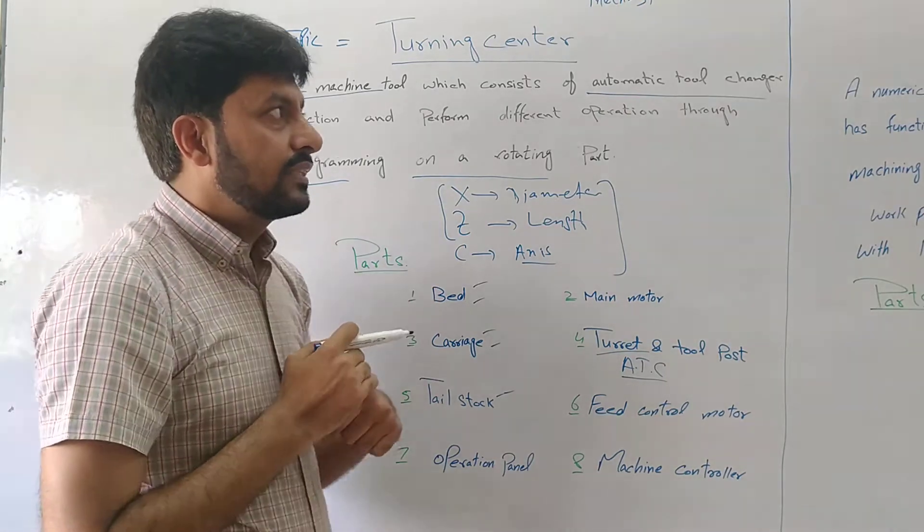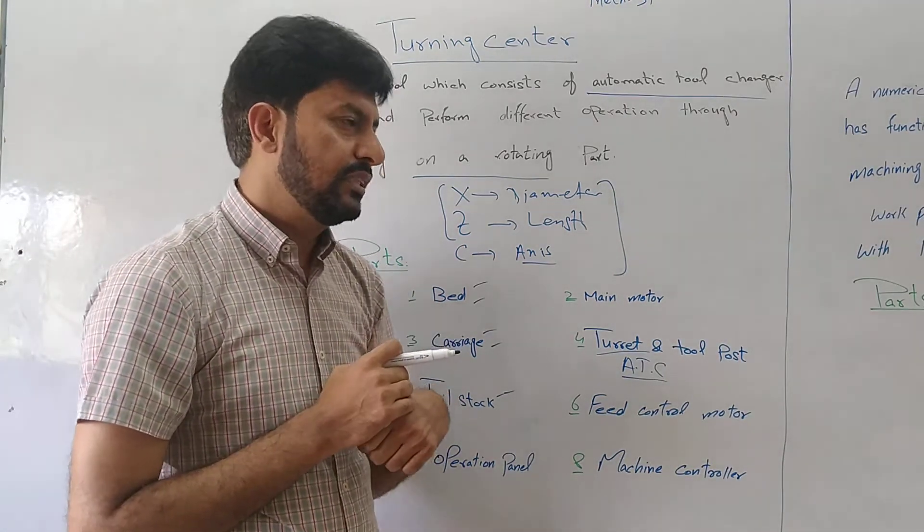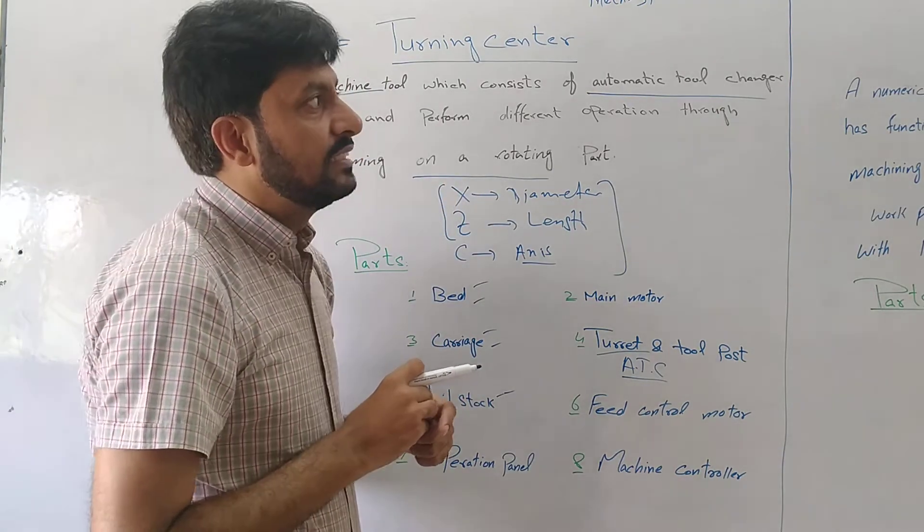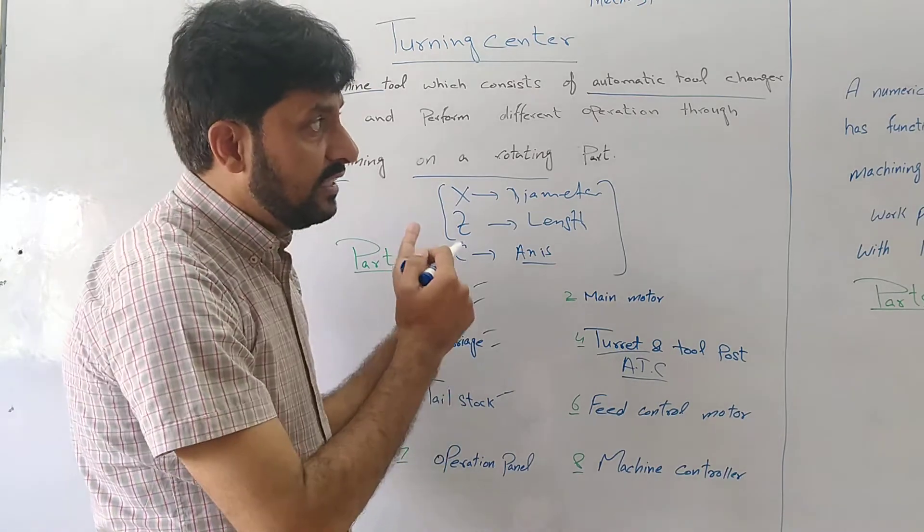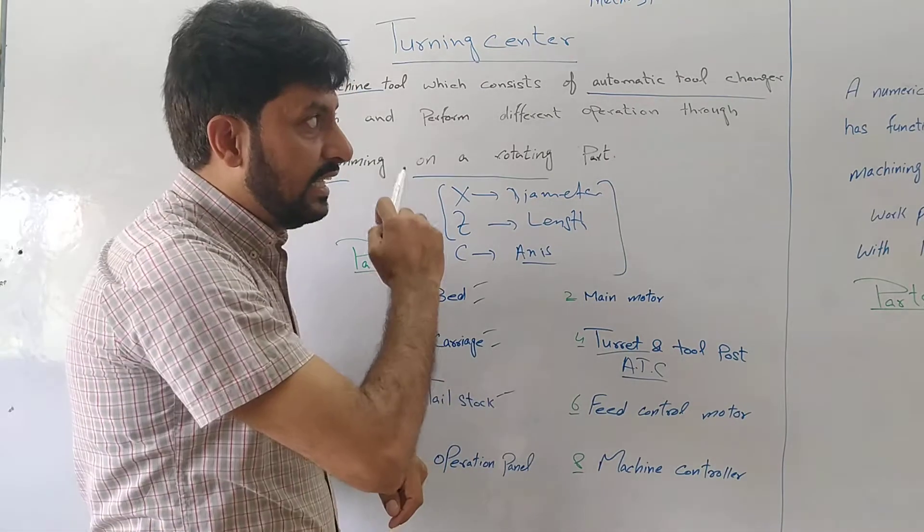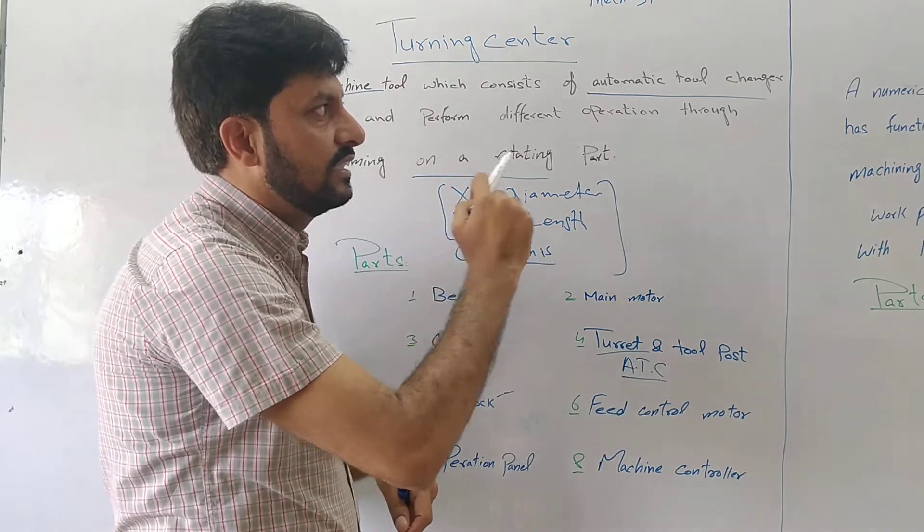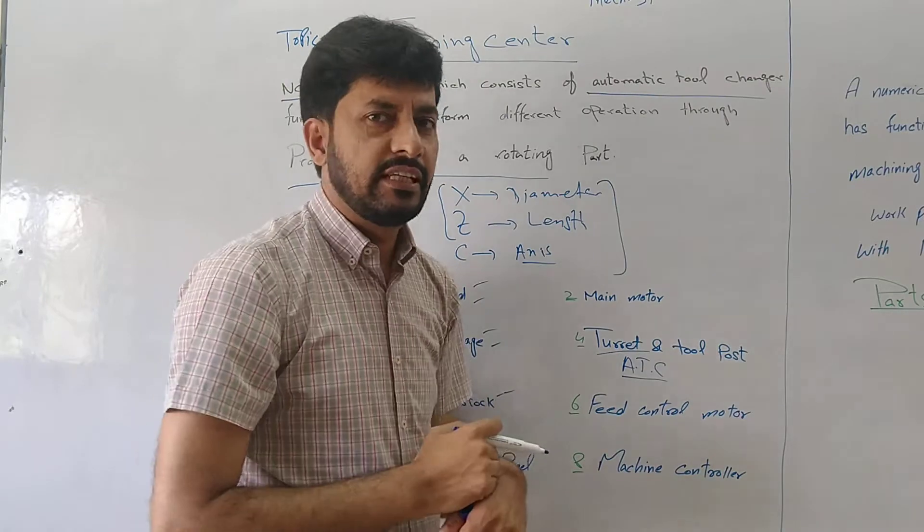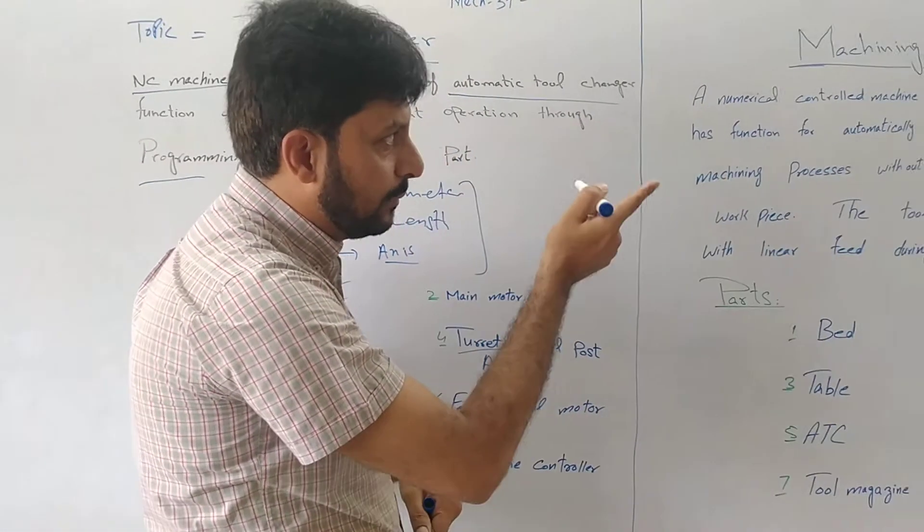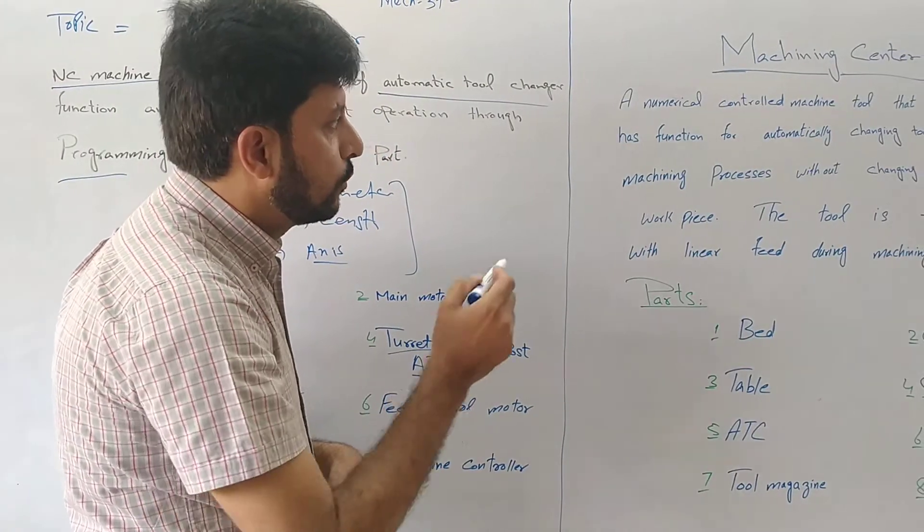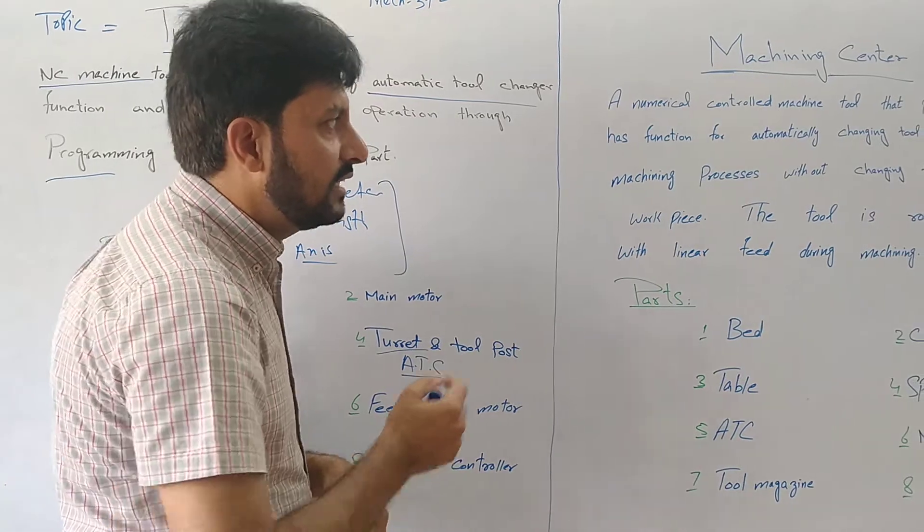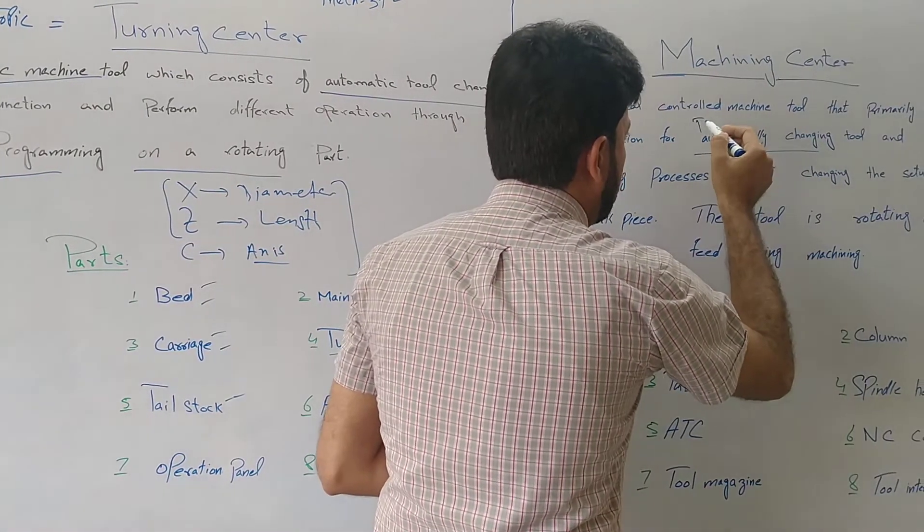Now, we are talking about machining center. What is machining center? This is a numerical control technology. We are talking about this process and the whole system automatically. This is our turning center's latest machine called machining center. This is a numerical control tool that primarily used rotary tools. Automatically changing tool. And from this can be ATC. ATC uses it.